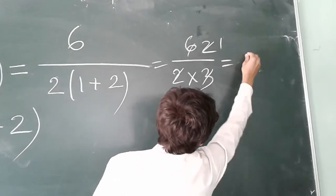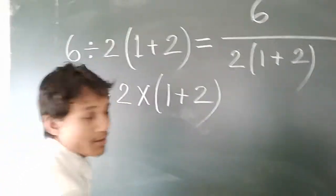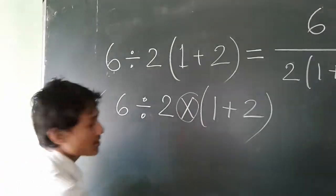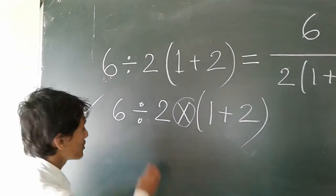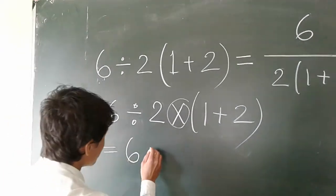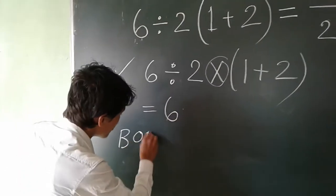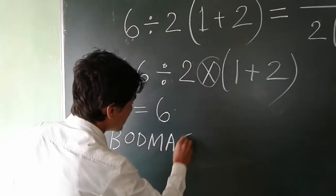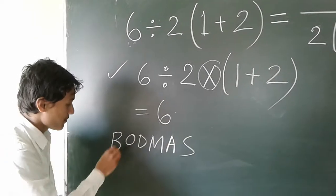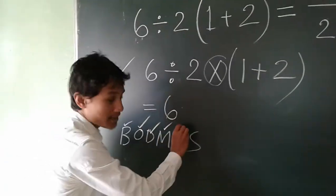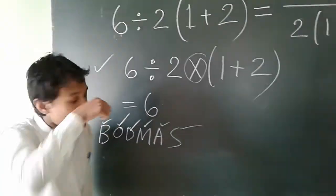But now in the second case, just because of this multiplication sign cross, we achieve the result according to BODMAS, this rule of simplification: Bracket of division, multiplication, addition, subtraction. If we follow this rule,